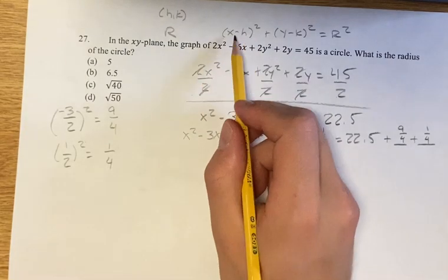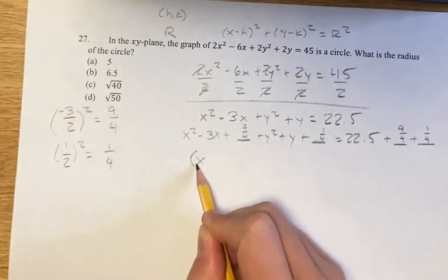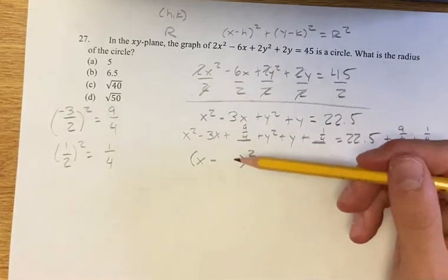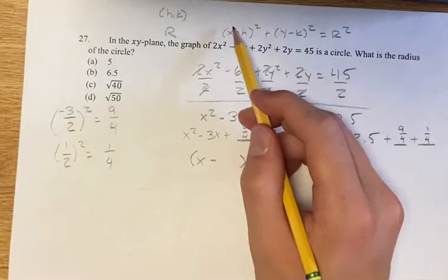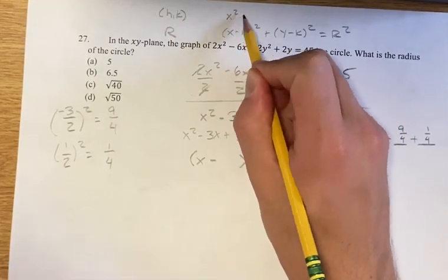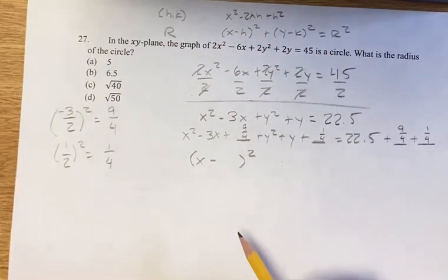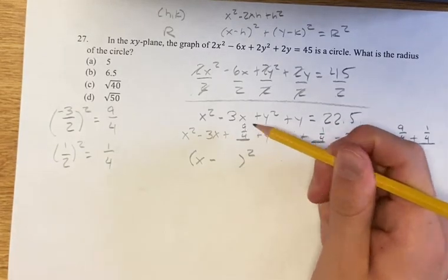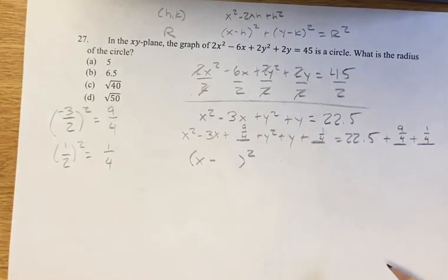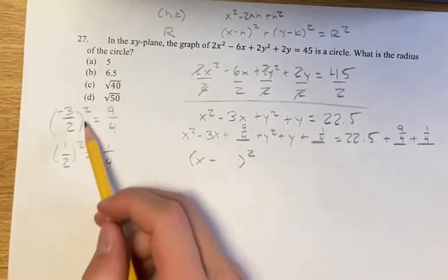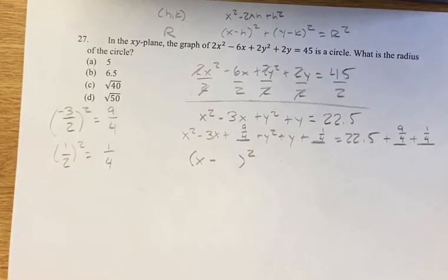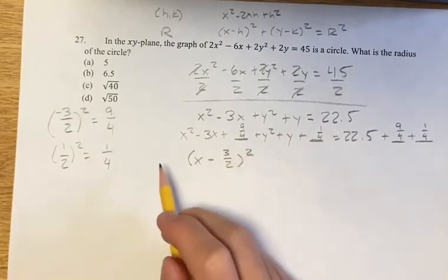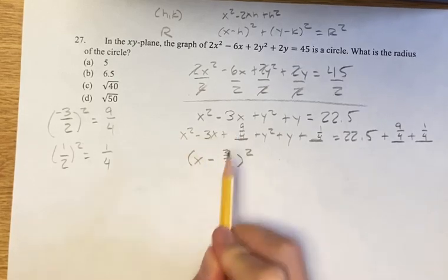Now we want to get this into the form x minus something, squared. We have the 9 fourths — thinking of it as h squared when we expand x minus h squared, which equals x squared minus 2xh plus h squared. So 9 fourths equals h squared, meaning h equals negative 3 halves. So x minus 3 halves, squared, expands to x squared minus 3x plus 9 fourths.